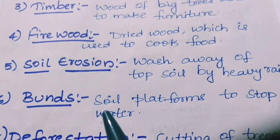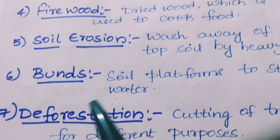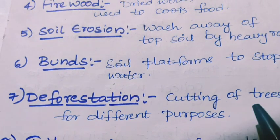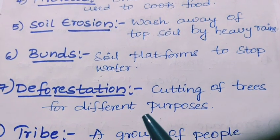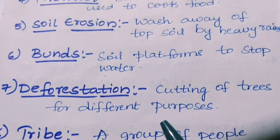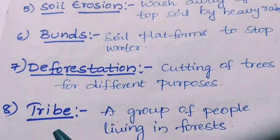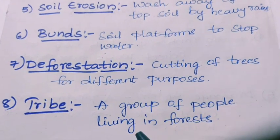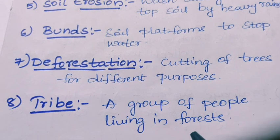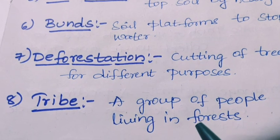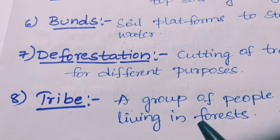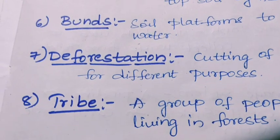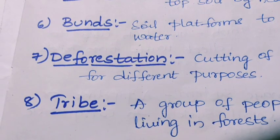Deforestation: cutting of trees for different purposes is called deforestation. Next, tribes: tribes are a group of people living in the forest, like Chenchos, Koyas, Gonds, etc. Keep watching Science Innovators and don't forget to like, share, and subscribe.